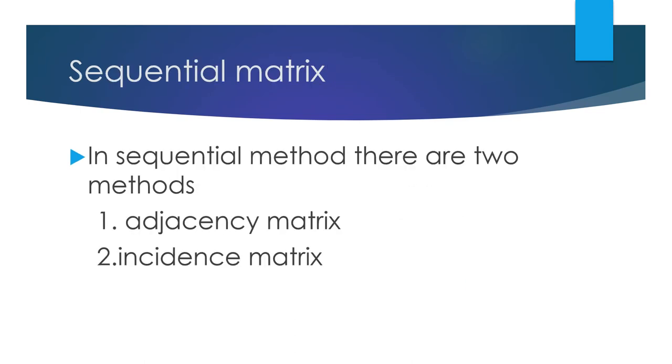Next is sequential representation. There are two methods: adjacency matrix and incidence matrix.